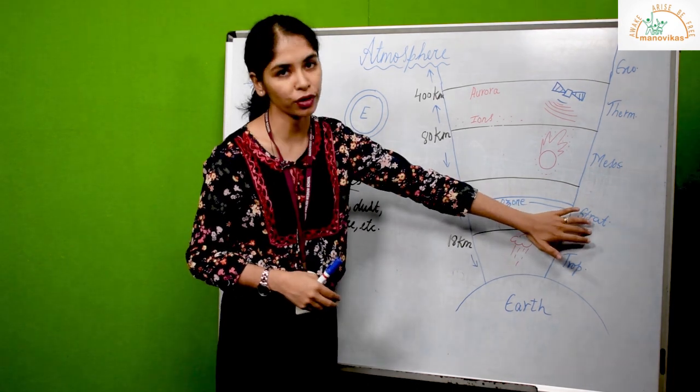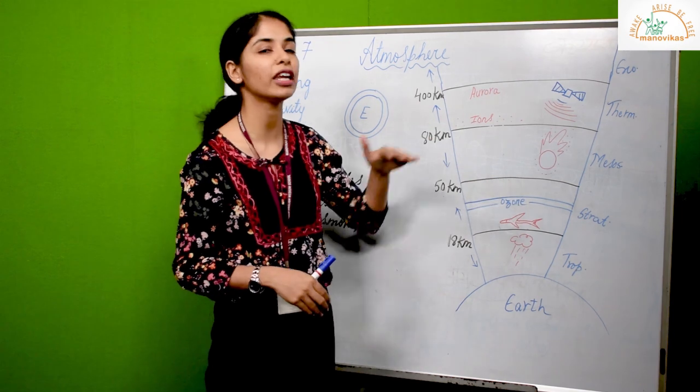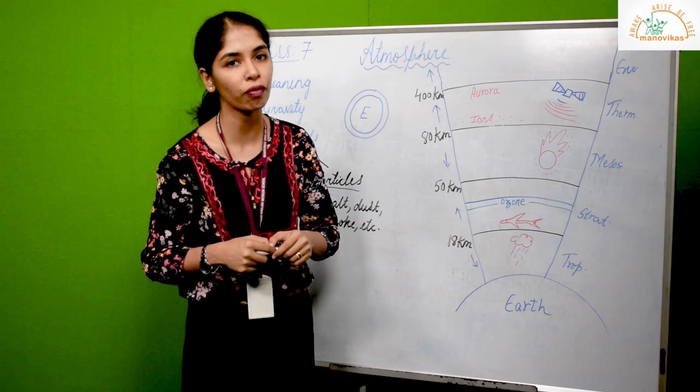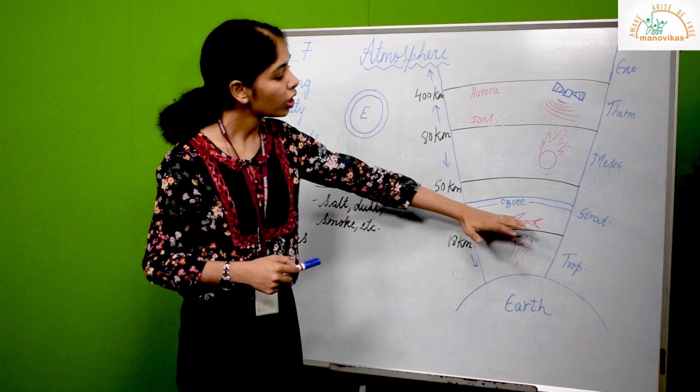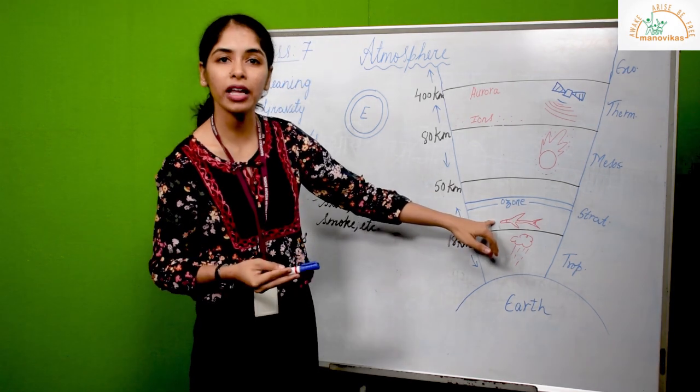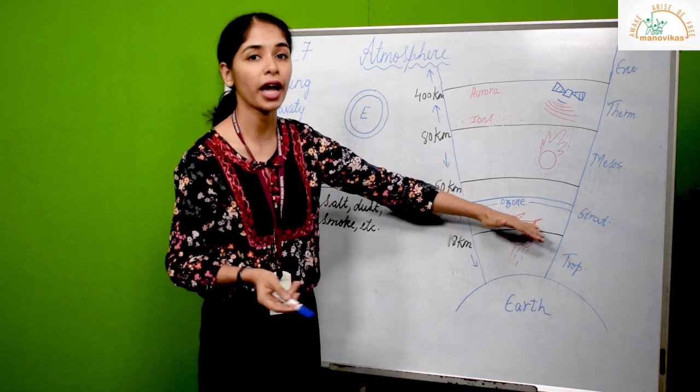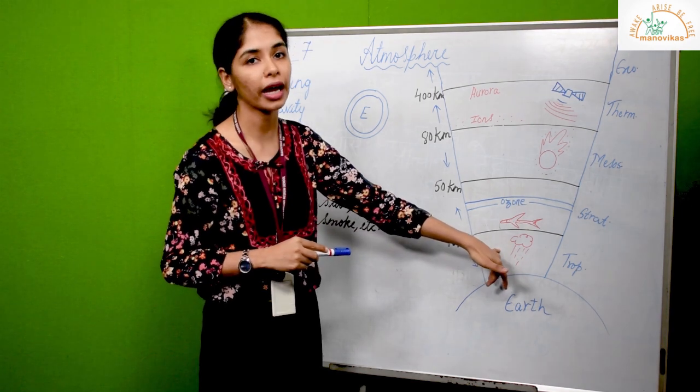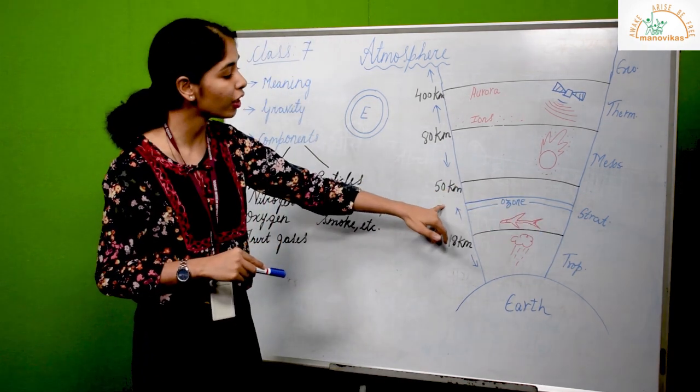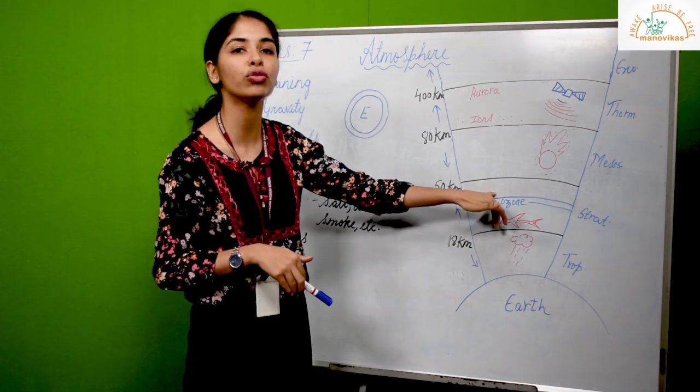The next layer that rests above troposphere is the stratosphere. The thickness of this layer varies between 18 kilometers to 50 kilometers. This is the layer which contains the ozone. As we all know, ozone is the layer which protects us from the harmful ultraviolet or UV rays. The lower part of this layer is very peaceful and calm, and that is why jet aircrafts or airlines prefer flying in the lower part of the stratosphere, slightly above the troposphere. In this layer, with increasing height, temperature also goes on increasing. That's because all the UV rays are absorbed here, so the temperature is also quite high.